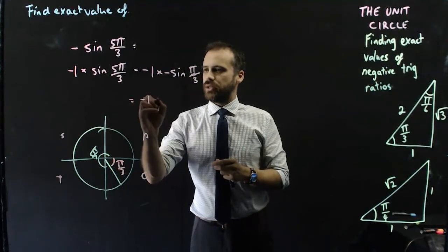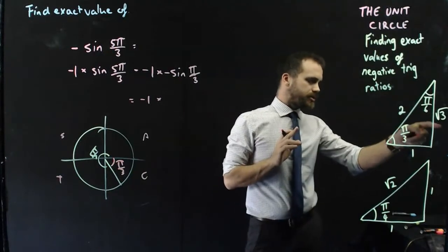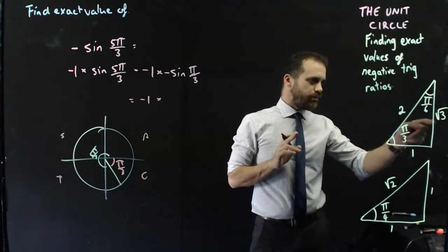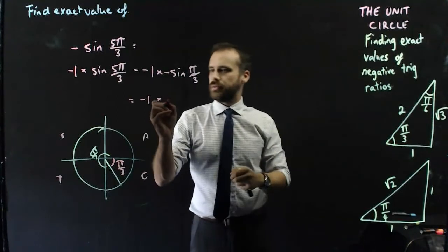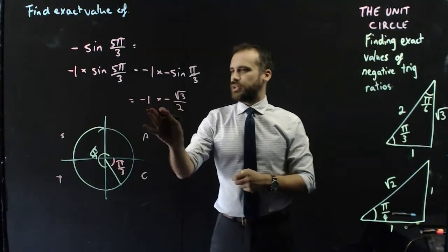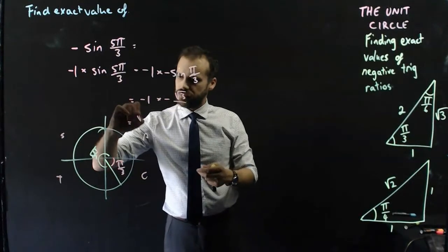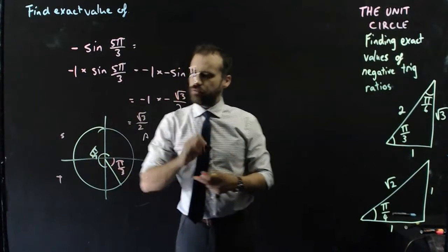Let's keep that negative 1 going. So, sine π/3, opposite over hypotenuse, root 3 on 2, but negative. And now I have negative 1 times negative root 3 on 2 is equal to positive root 3 on 2.